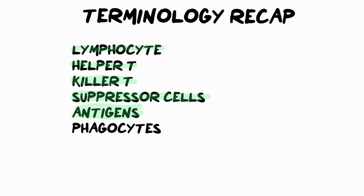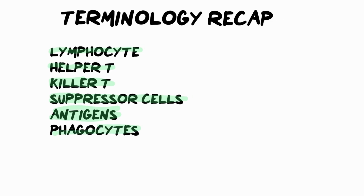We also spoke about antigens — a really important word throughout the immune system. Antigens are protein markers or flags on the outside of cells that label them as your own cell or somebody else's — a foreign microorganism. They are like uniquely shaped flags made out of protein on the outside of the cell. Last but not least, phagocytes — non-specific immune cells whose sole responsibility is to blindly move through your bloodstream and tissues, engulfing and absorbing foreign invaders and old dead cells.